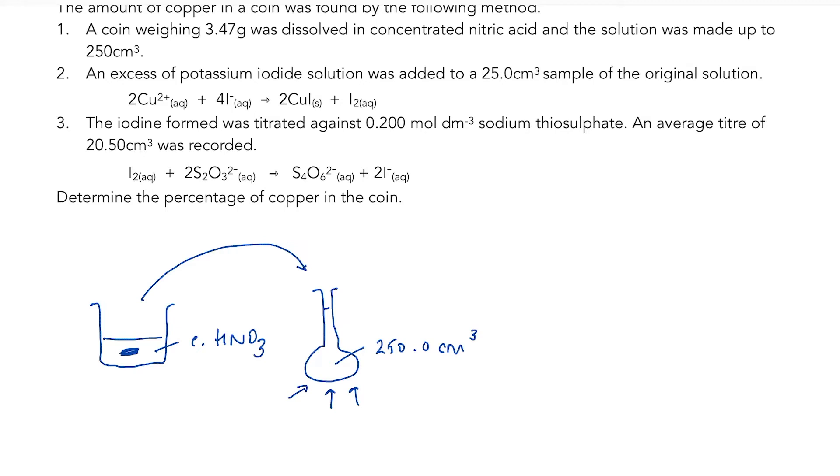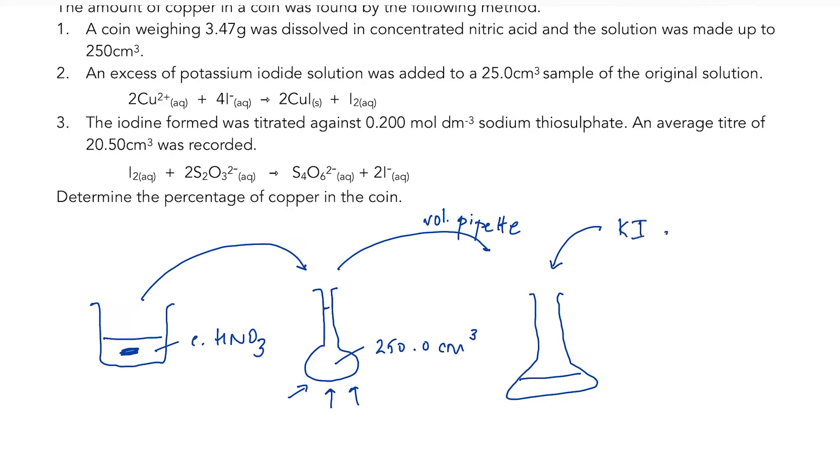An excess of potassium iodide was added to 25 centimetres cubed of the original solution. So they have used, I would think, a volumetric pipette to extract 25 centimetres cubed. That has gone into a conical flask. And to that, they have also added an excess of potassium iodide solution, KI(aq).